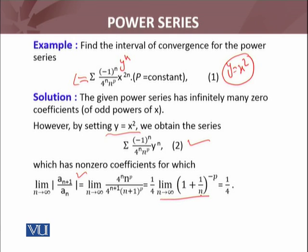When I evaluate this limit, 1 over infinity is 0, so (1 + 0)^{-p} equals 1 to the power minus p. p is any constant, whatever value it is, that will always give 1 over 4.